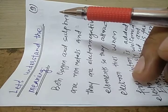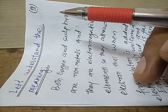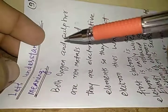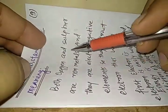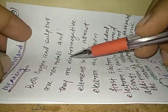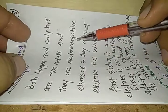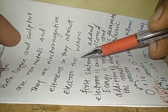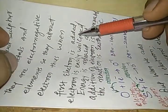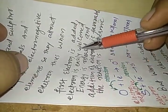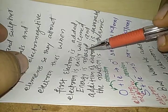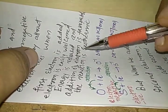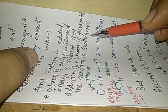Let us understand the meaning, my dear students. Both oxygen and sulfur are non-metals and they are electronegative elements, so they attract electrons. When the first electron is added, the electron is easily welcomed, energy is released, and addition of the electron is favorable. Thus, the reaction is exothermic.